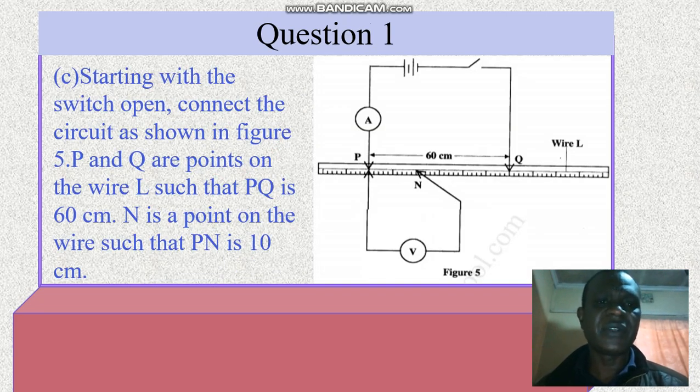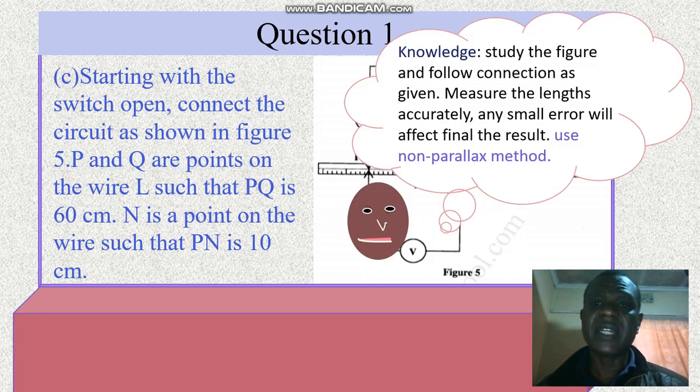Starting with the switch open, connect the circuit as shown in the figure. P and Q are points on the wire L such that PQ is 60 centimeters. N is a point on the wire such that PN is 10 centimeters, which we are going to vary as we go along. Now study the figure and follow the connections as given. Measure the length accurately. Any small error will affect your final result.